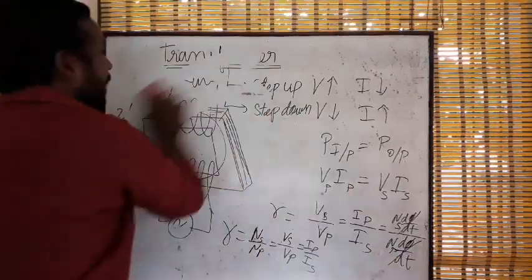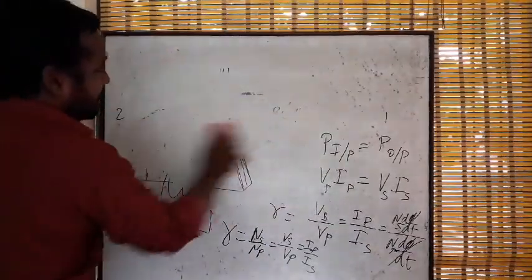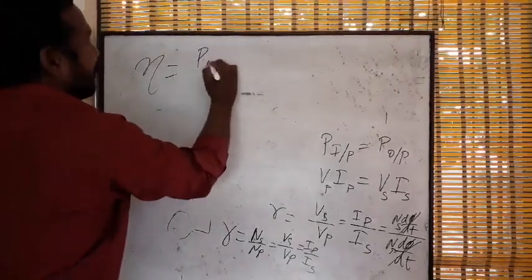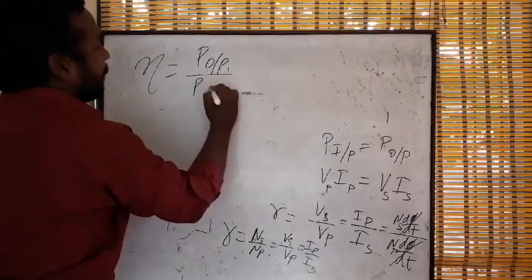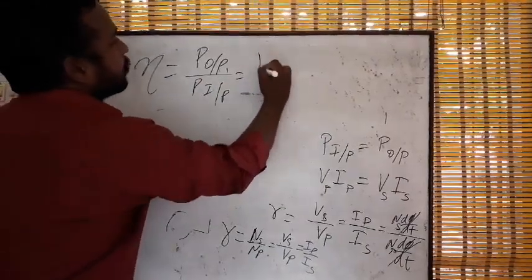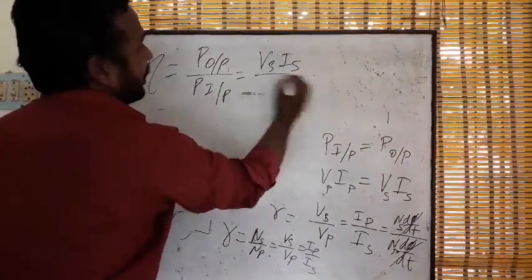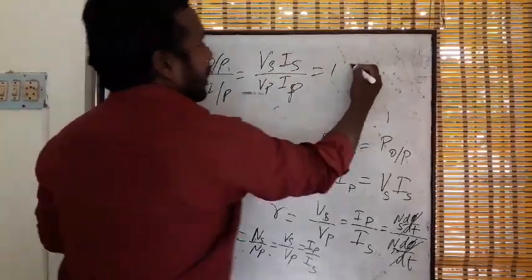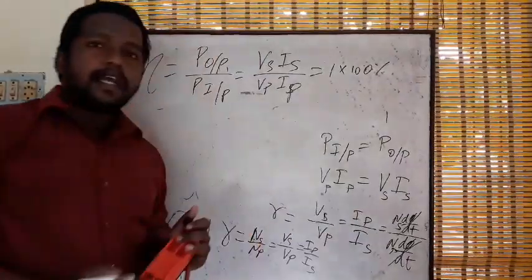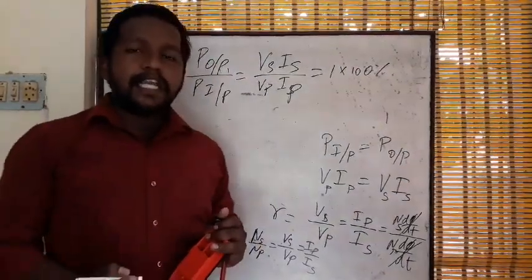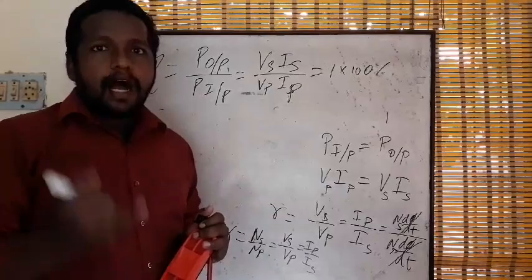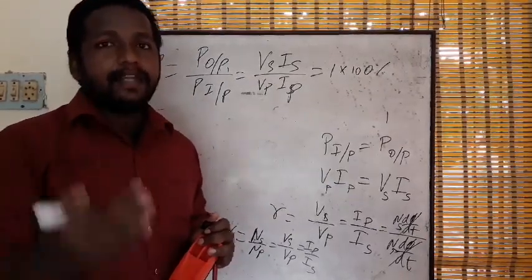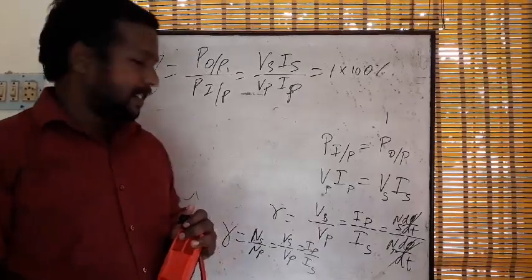The expected efficiency would be 100%. Efficiency = Power output / Power input = (Vs × Is) / (Vp × Ip), which gives 1 × 100 = 100%. However, we will not get 100% efficiency in reality because of eddy current losses, flux leakage, and overheating. These are the reasons we cannot achieve 100% efficiency.